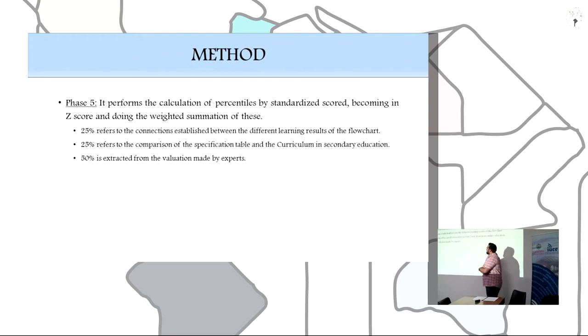Finally, it pairs for the calculation of percentiles by standardized score becoming set scores and doing the weighted summation of these. 25% refers to the connection established between the different learning results of the flow chart, 25% refers to the comparison of the specification table and the curriculum in secondary education, and 50% is extracted from the evaluation made by experts.